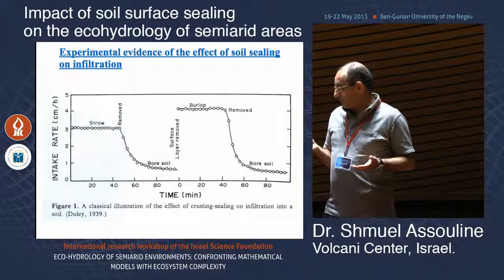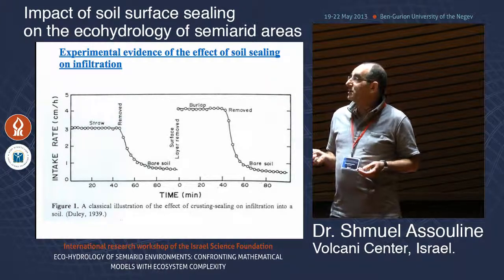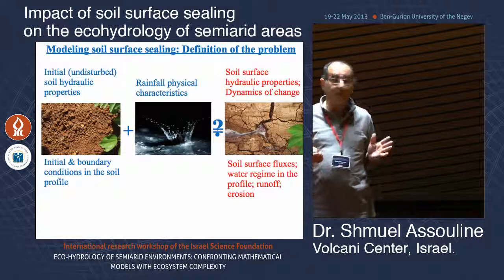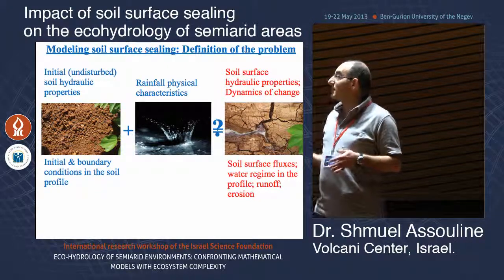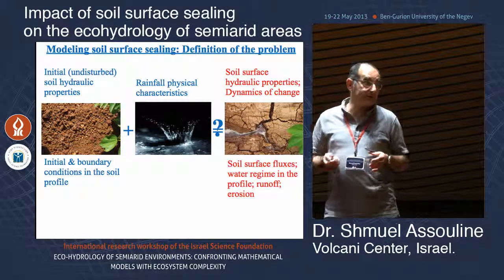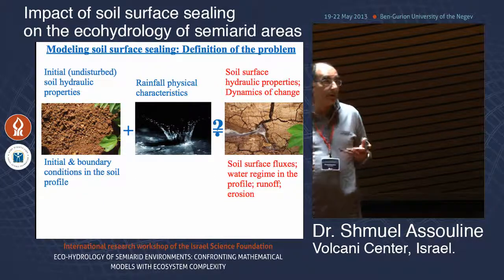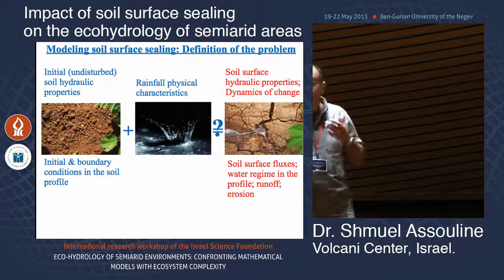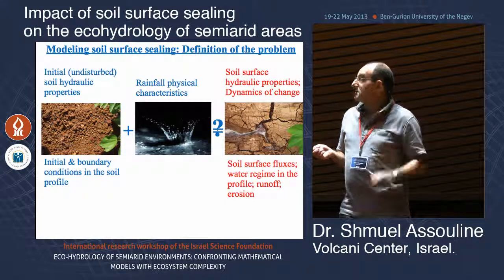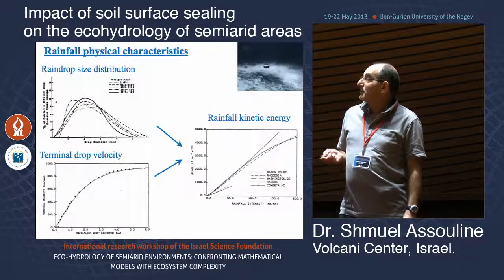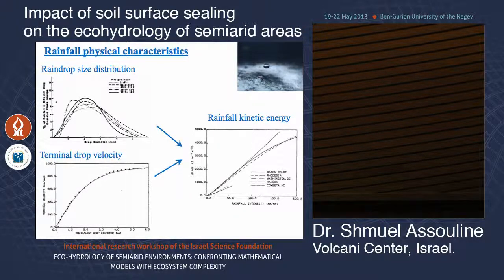To model this process, we have initial soil hydraulic properties and known initial and boundary conditions of the soil profile. We also know the rainfall physical characteristics — kinetic energy and intensity. What we want to determine are the new hydraulic properties of the surface formed by the combination of rainfall and initial soil conditions, in order to simulate surface fluxes like infiltration, runoff, and erosion.